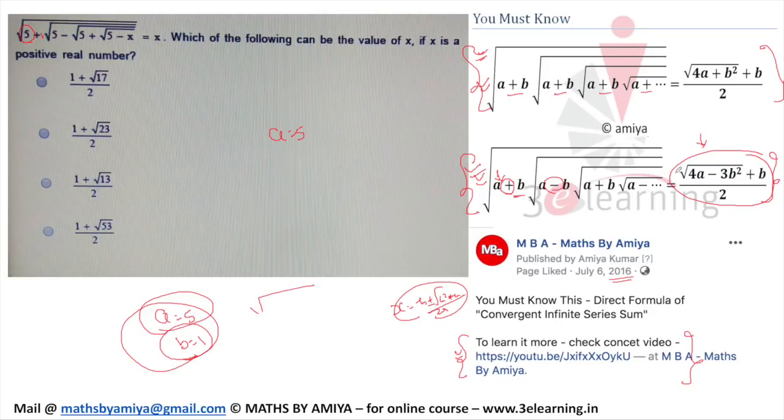So what do I have to do? 4a where a is 5, so 20 minus 3b, a square, b's value is 1, so minus 3 plus 1 divided by 2 is the answer. So it will be root 17 plus 1 by 2 is the answer of this question. The answer to this question will be option number A.